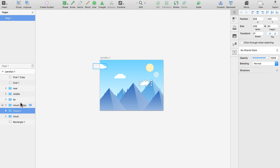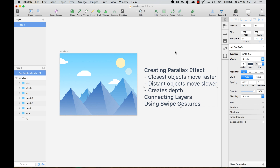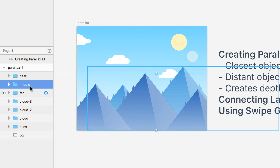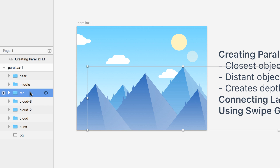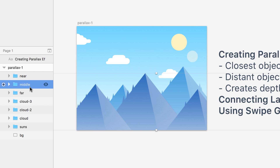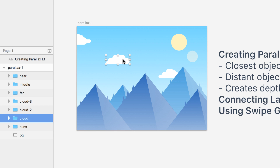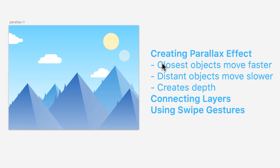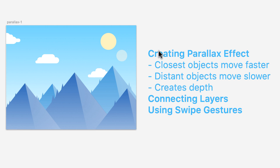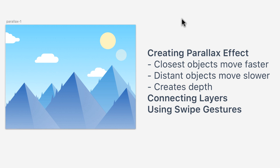I have finished the design. I created three different groups of mountains: one which is near, one which is in the middle, and one which is the most far away. I also added the sun, some clouds, and the background. The first thing you want to know about creating the parallax effect is how to create motion — you make the closest objects move faster and the more distant objects move a little bit slower, and that creates a sense of depth.